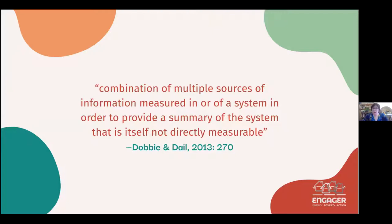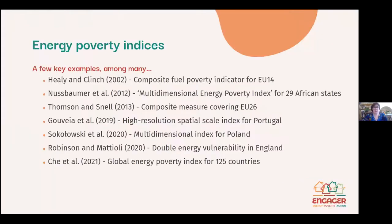I'd like to start by briefly defining what I mean by a composite index. I've used a quote from Dubby and Dale, who talk about it being the combination of multiple sources of information measured of a system in order to provide a summary of the system that is itself not directly measurable. As you might know, there exists a huge range of energy poverty indices spanning Europe, Latin America, Asia, Africa, and on a more comprehensive global scale, as is the case with the more recent paper by Cheatal.